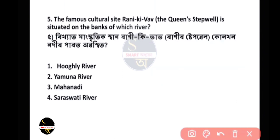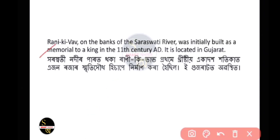Q5: The famous cultural site Rani Ki Vav is situated on the banks of which river? Rani Ki Vav is located on the banks of the Saraswati river. It is situated in Gujarat and was constructed as a memorial in the 11th century AD.